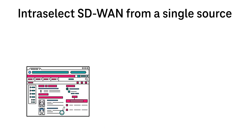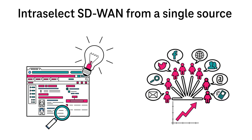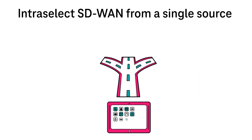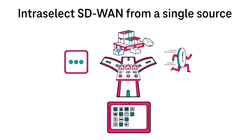This ensures deep visibility of the individual components of the solution and thus increases the availability of your business-critical applications. Our overlay routes applications over the best path related to jitter, packet loss, and delay. The path selection is automatically controlled by central components. This automation additionally secures the best possible performance for each application.